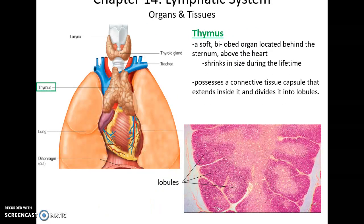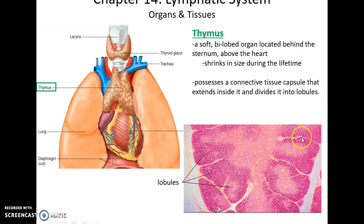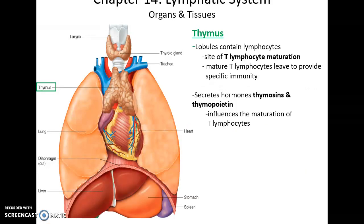The immature T lymphocytes arrive in the thymus, which is found in the thoracic cavity slightly superior to the heart, behind the sternum. It has connective tissues and a capsule that divides it into lobules, allowing for the maturation of T lymphocytes through the secretion of hormones — thymosins and thymopoietin — that cause the T lymphocytes to properly mature.